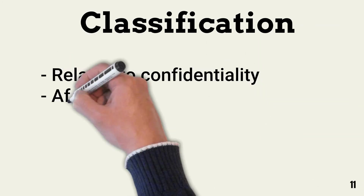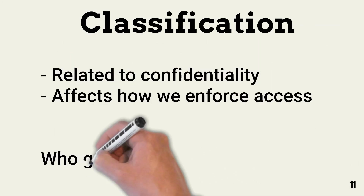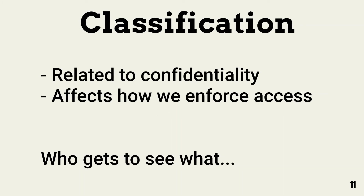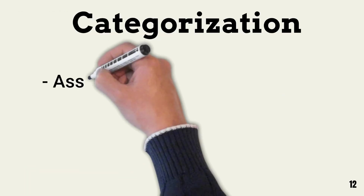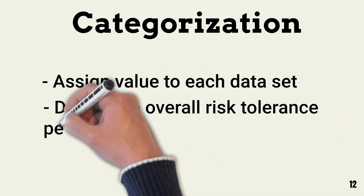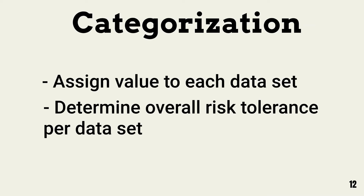Before moving to categorization, it is important to understand how we use classification. Classification is related to confidentiality. Unlike categorization, it only addresses the confidentiality factor of the CIA trilogy. Part of the classification step is inventorying information assets. Once classification is complete, we can begin categorization.